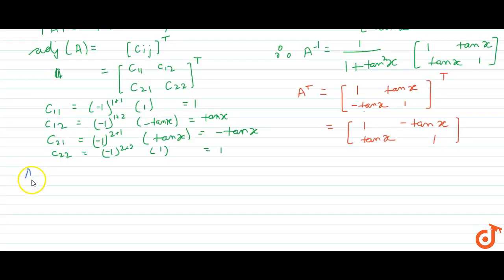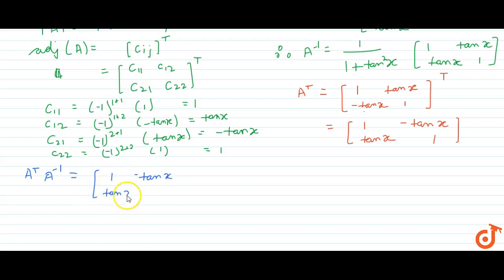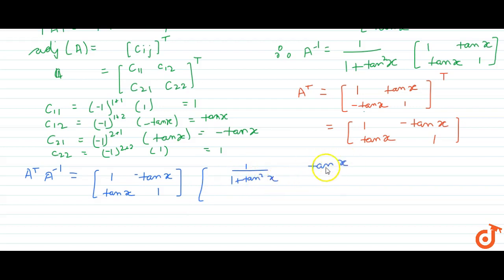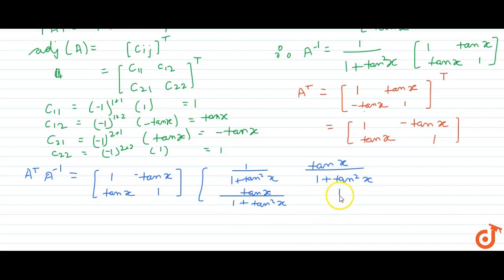Now we calculate A transpose multiplied by A inverse. This is [1, -tan x; tan x, 1] multiplied by the matrix with entries 1/(1 + tan²x), -tan x/(1 + tan²x), tan x/(1 + tan²x), and 1/(1 + tan²x).